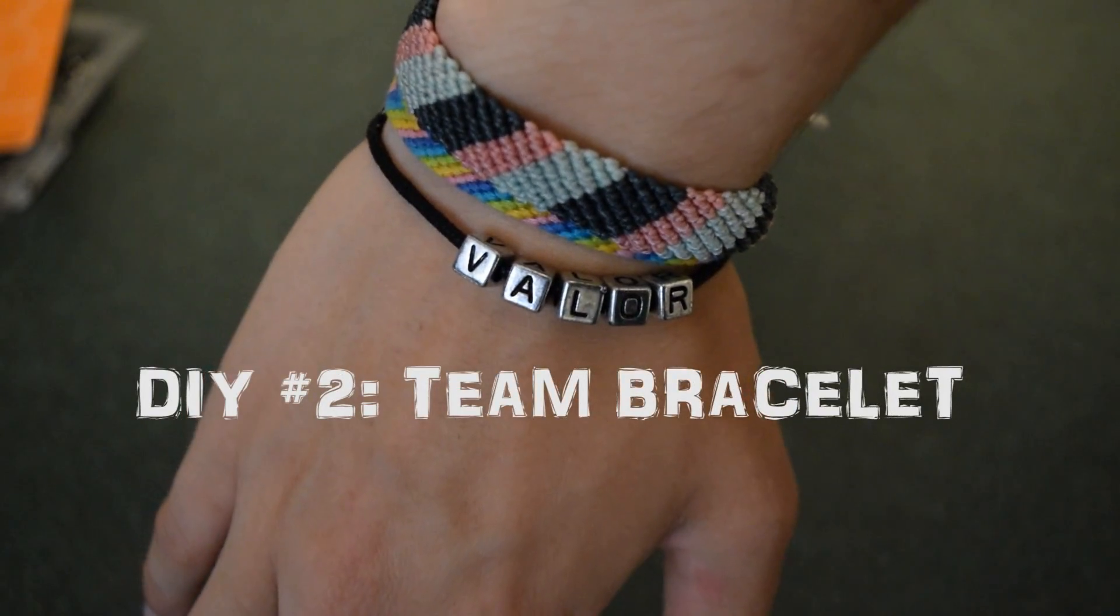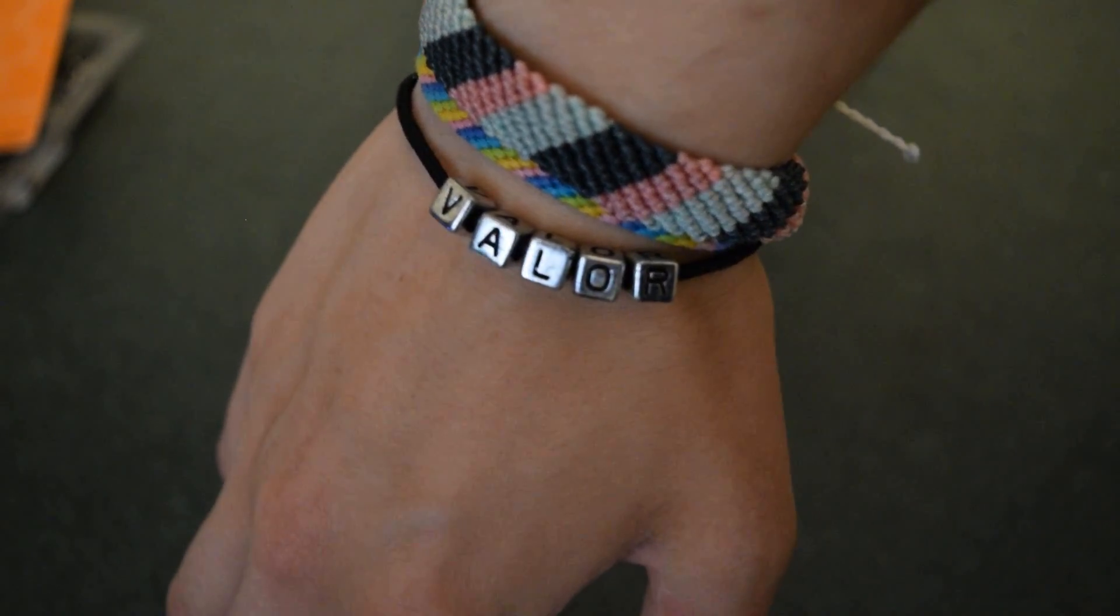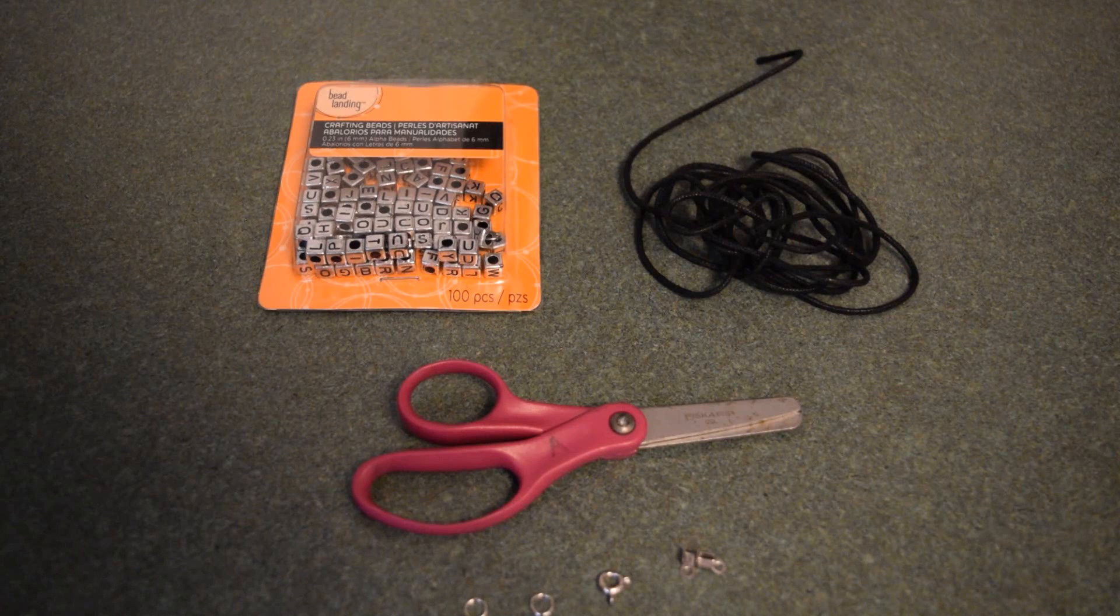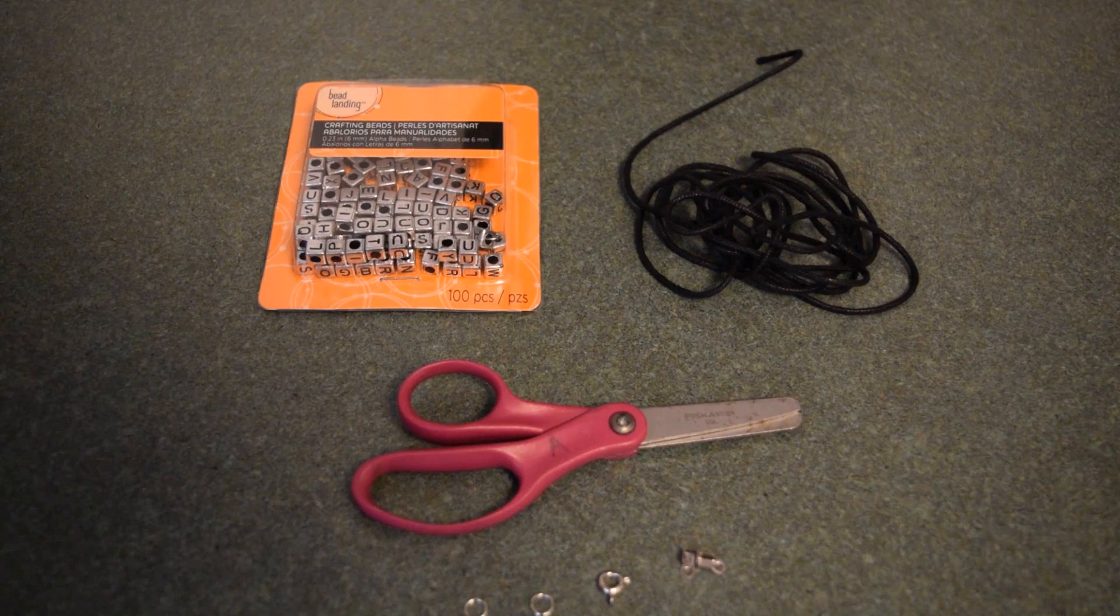For our next DIY, we are going to be making this easy team bracelet. You will need cotton cord, letter beads of your choice, crimps, a clasp, two jump rings, and pliers.